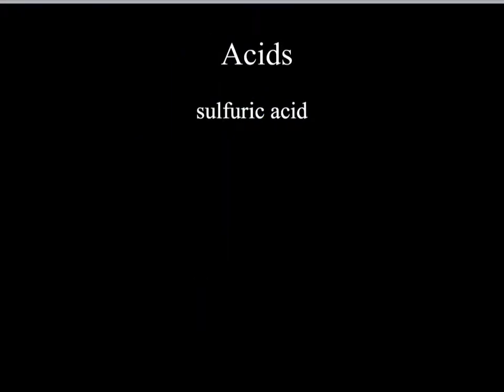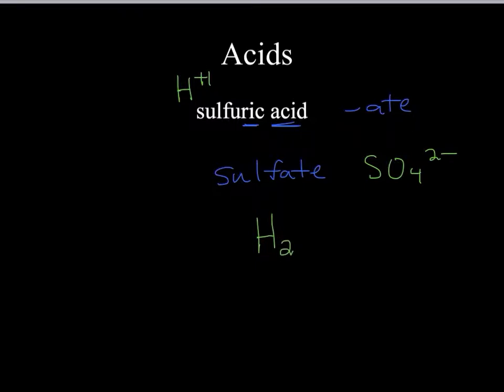Sulfuric acid, on the other hand, ic acid comes from the rule ate. So I end up getting sulfate as my anion. Sulfate is SO4 2-. So because I have a 2- here, and hydrogen has a plus 1 oxidation state, I need 2 hydrogen to balance out with my 1 sulfate. So H2SO4 is the formula for sulfuric acid.